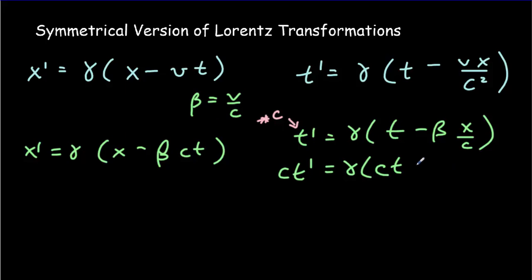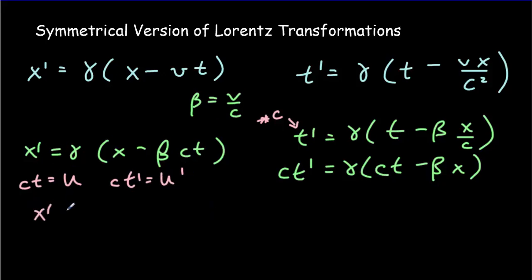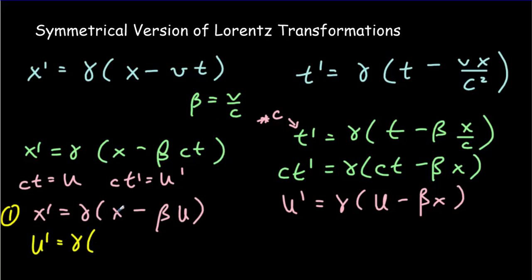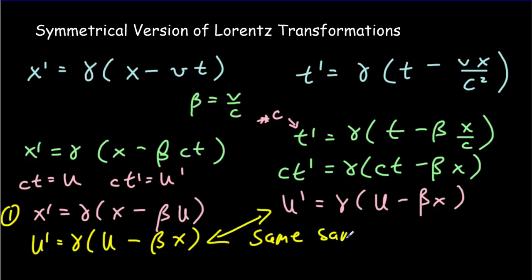Now let's define U = ct and U-primed = ct-primed. The first equation becomes x-primed equals gamma times (x minus beta·U), and the other becomes U-primed equals gamma times (U minus beta·x). If we take the first equation and interchange the roles of x and U — putting U-primed where x-primed was, U where x was, and x where U was — we get exactly the second equation. So there is exact symmetry between x and the variable ct.